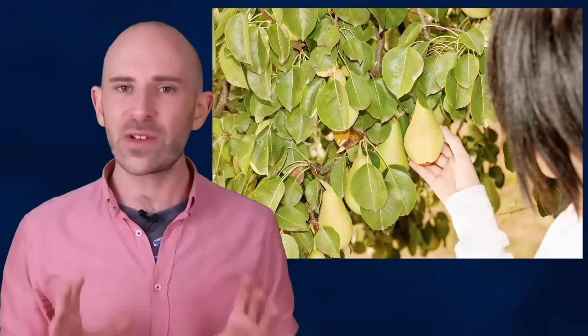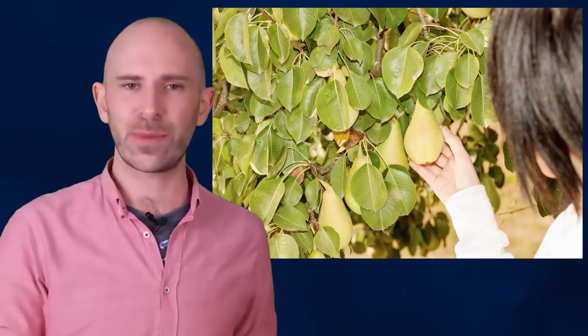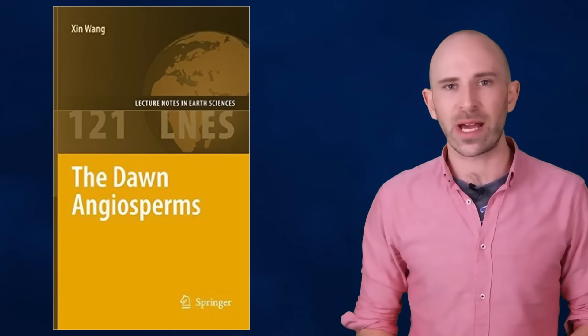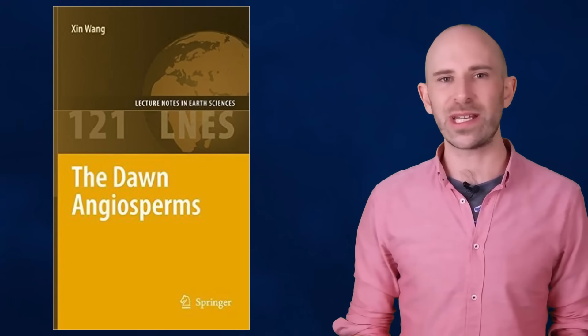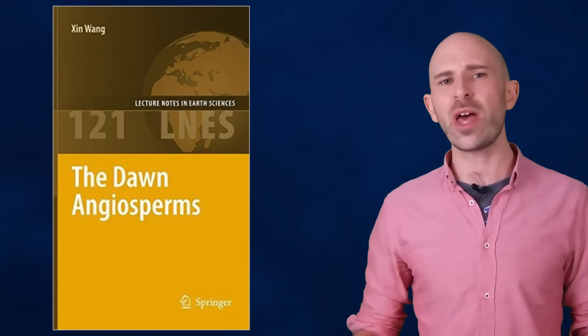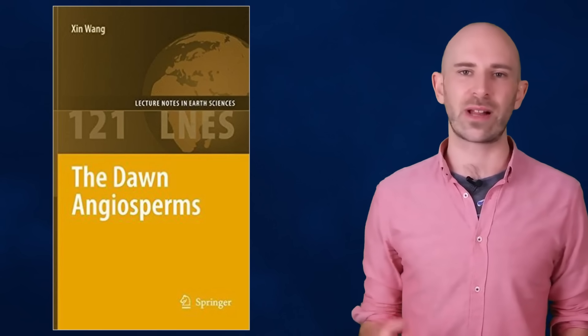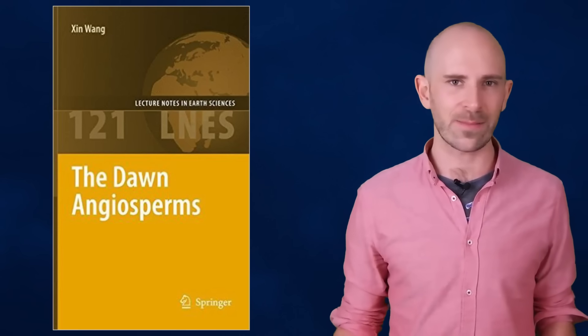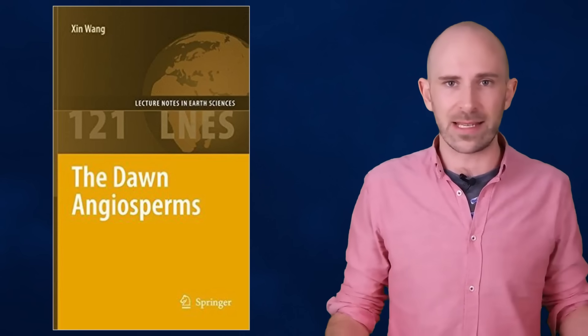As previously mentioned, angiosperms include any tree that produces fruit, as well as any tree that produces seeds protected by some sort of shell, like an acorn. According to "The Dawn Angiosperms" by Xing Wang, the term angiosperm was first coined way back in 1690 by German botanist Paul Hermann, who coined it as a way of classifying members of the plant kingdom by the only thing they all had in common: seeds.